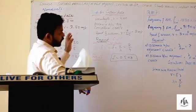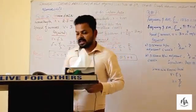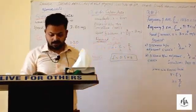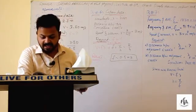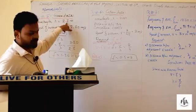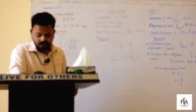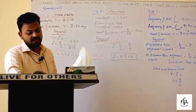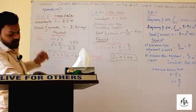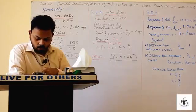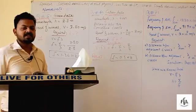Now we are going to start with the remaining three numericals — fifth, sixth, and seventh. Question number five says: water waves with wavelength 2.8 meters are produced in a ripple tank and travel with a speed of 3.80 meters per second. So wavelength λ = 2.8 m and speed v = 3.80 m/s are given. We need to find the frequency of the straight vibrator that produced them.